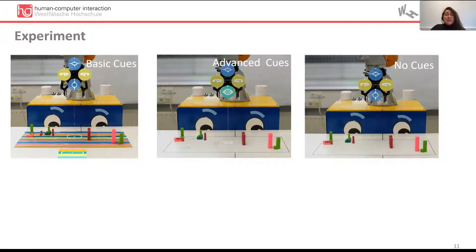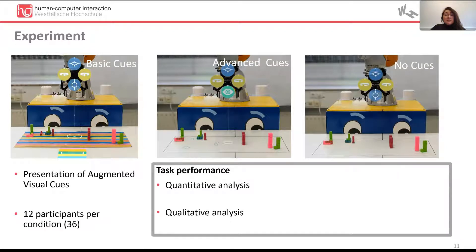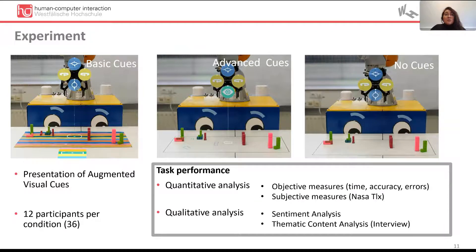We evaluated each presentation of visual cue against the baseline without cues in a between participants experiment. Participants performed the pick-and-place task with three different objects. We evaluated task performance through time, accuracy, and errors as quantitative measures. As qualitative measures, we asked participants to provide words to describe their experience and carried out an interview. To the collected information, we performed sentiment analysis and thematic content analysis.